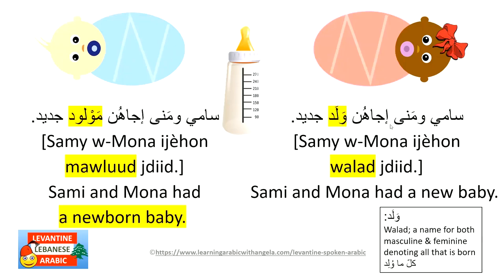In the plural: 'Sami w Mona ijayhun walad jdid' — they got a new baby. Note that walad as a verb means to give birth, but walad as a noun (ism) can refer to anyone born, male or female. We also say mawlud — the passive participle from that verb — meaning a newborn. So terms to know: walad, mawlud, bebe, when speaking about infants and newborns.